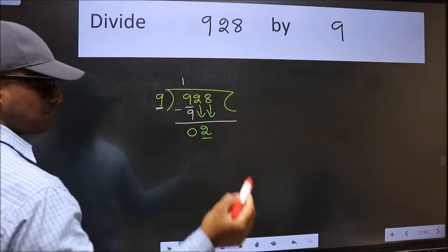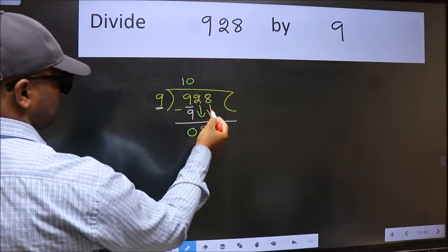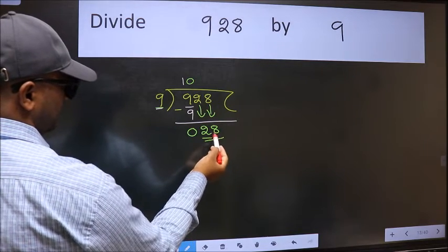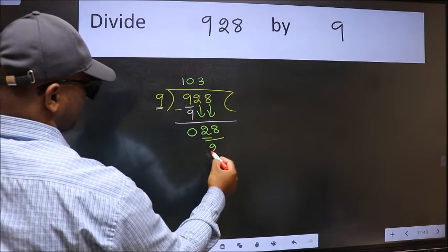And the rule to bring down the second number is we should put 0 here. Then only we can bring this number down. Now 28. A number close to 28 in the 9 table is 9 threes, 27.